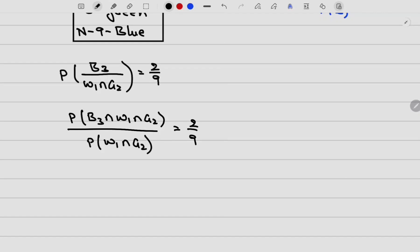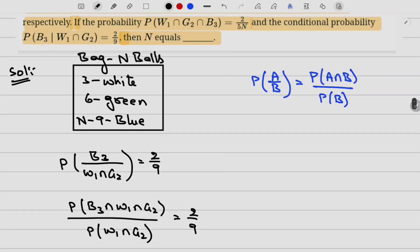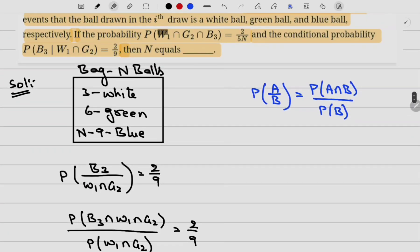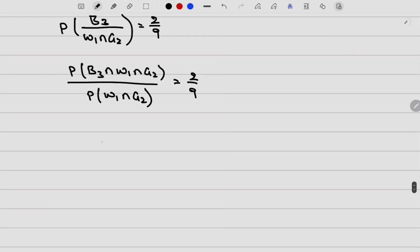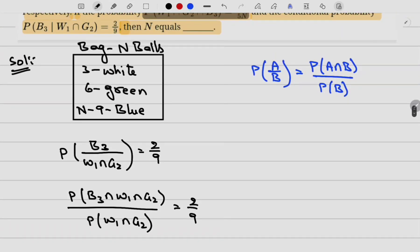Now this numerator value is already given in the question which is 2/(5N). Now let me write here 2/(5N) divided by... Now I need to draw one white ball and one green ball.